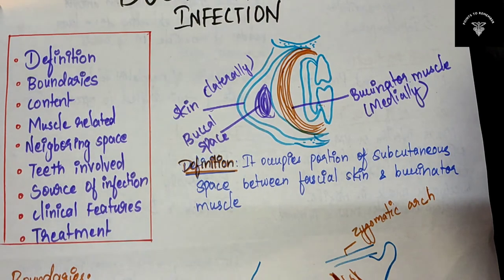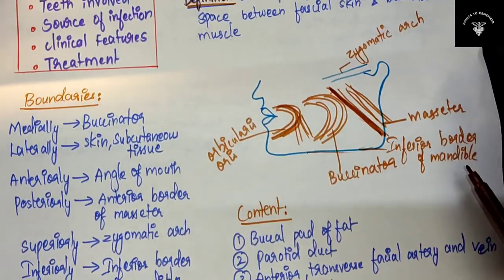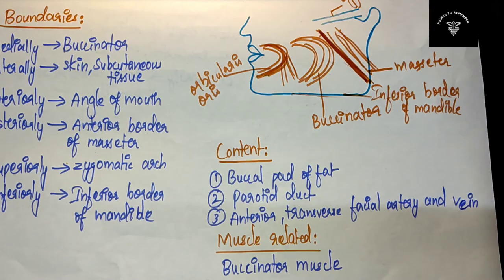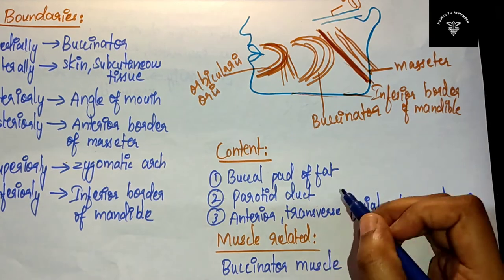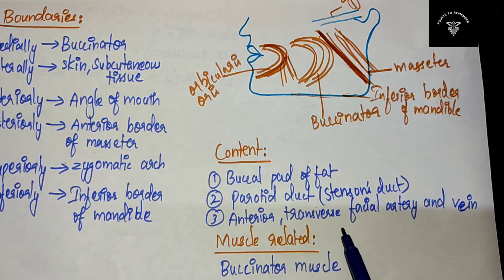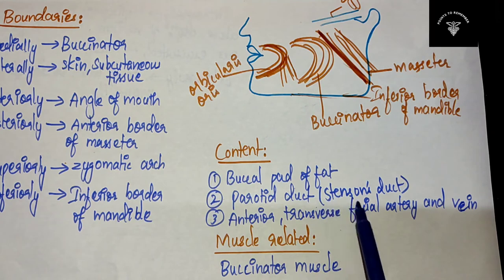Next, the contents of the buccal space. There are only three contents: first, the buccal part of fat; second, the parotid duct, which is also known as Stensen's duct; and third, the anterior transverse facial artery and vein.